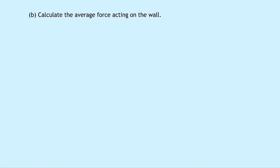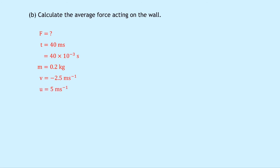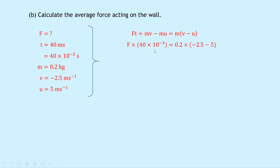Part B says to calculate the average force acting on the wall. The time of contact is 40 milliseconds, which converts to 40 times 10 to the minus 3 seconds. The mass is 0.2 kilograms, the final speed V is minus 2.5 meters per second, and the initial speed U is 5 meters per second. Using FT equals M(V minus U): F times 40 times 10 to the minus 3 equals 0.2 times (minus 2.5 minus 5). Dividing both sides gives F equals minus 37.5 newtons.